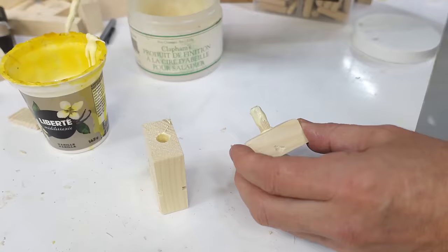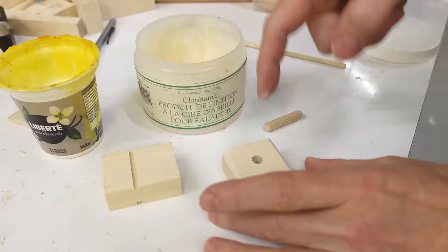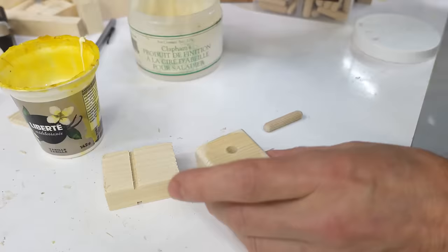Now, with all my dowel joint ones, of course, there's always glue squeeze out. And, that makes for a butt joint with the rest of the wood. So, I rubbed a little bit of salad bowl finish on the piece of wood to make sure the glue wouldn't actually stick to the flat surface.